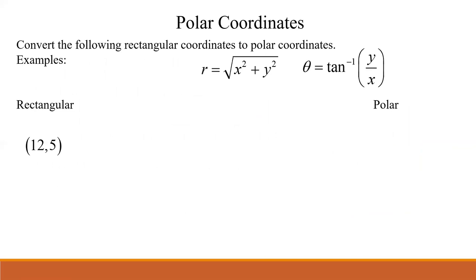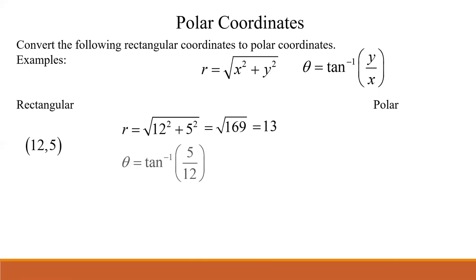We're going to start with rectangular and go to polar. We've got the point (12, 5). To find r, use the Pythagorean theorem: the square root of 12² + 5² equals the square root of 169, which is 13. For theta, it's always arctan(y/x) — put that in the calculator, make sure you're in degrees, and you get 22.62°. This point is in quadrant one, so that answer is all there is. So our polar coordinate is (13, 22.62°).